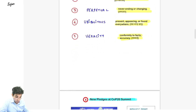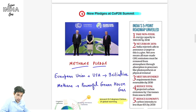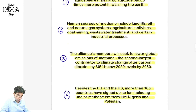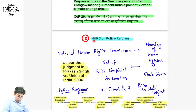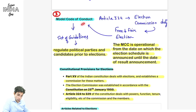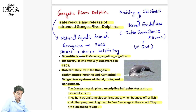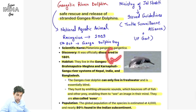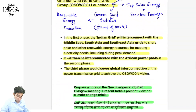If you come across any other important word, write down that word along with its meaning in the comment section down below. Aaj hum topics dekhenge: new pledges at COP26 summit, deforestation, National Human Rights Commission on police reforms, model code of conduct - abhi bypolls hue hain kuch rayon mein, and we will get to know about Gangetic River Dolphin.